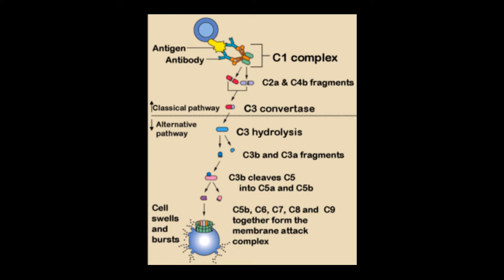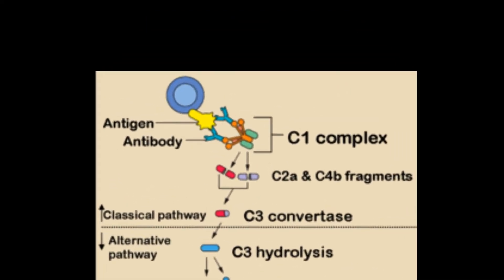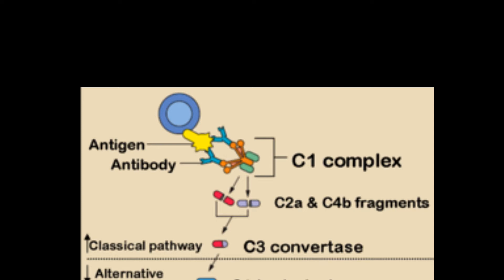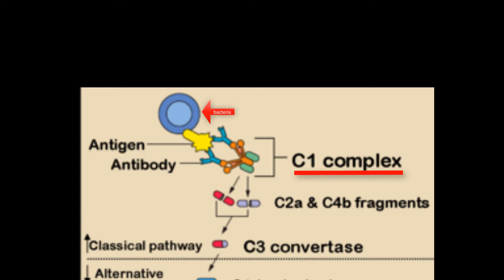In the classical pathway, we will see a bacteria that has on its surface an antigen previously recognized by our immune system, and an antibody has been formed to recognize it more quickly. The antibody will bind to the antigen. Thereafter, mucosal cells may produce C1 — complement 1 protein — which has several portions: one Q, two R's, and two S's. The Q will be the binding part, and C1 has serine proteases that will continuously cleave and activate other parts.